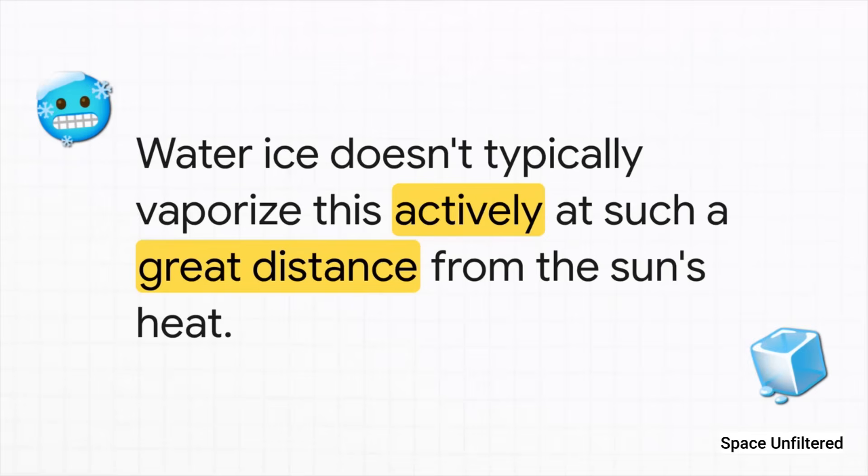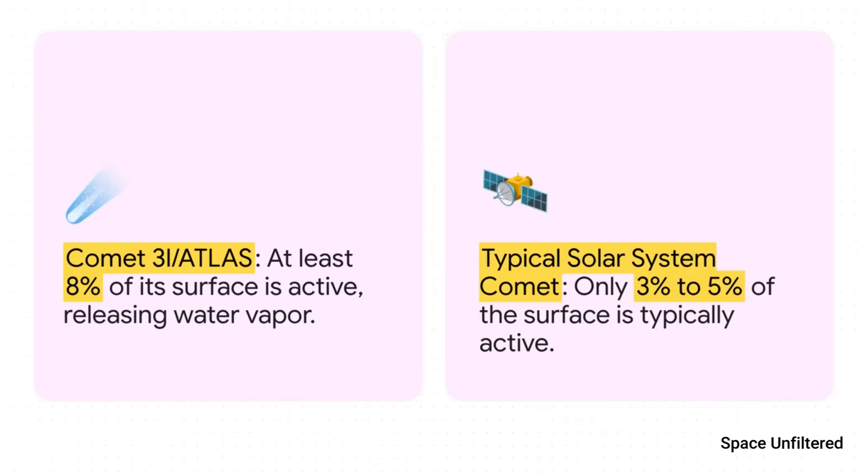At that kind of distance, it is incredibly cold. Water ice shouldn't be sublimating with so much energy. Usually comets that belong to our solar system are much quieter when they're that far out in the deep freeze of space. So here's the bottom line: based on all that water loss, researchers figure that at least eight percent of the comet surface has to be active. That might not sound like a lot, but it's a surprisingly huge number, almost double what we typically see from comets born in our own solar system.